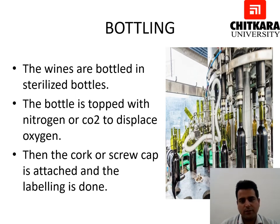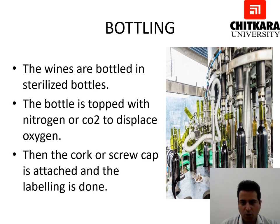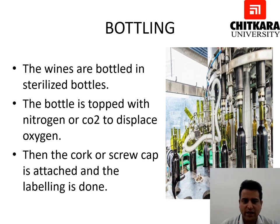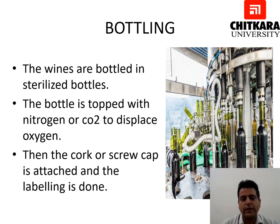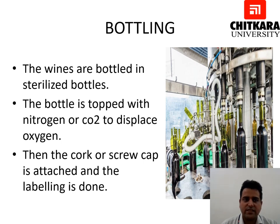The last step in the production process of white wine is bottling. The wines are bottled in sterilized bottles. The bottle is topped with nitrogen or CO2 to displace oxygen, as oxygen can be very harmful to the wine. Then the cork or screw cap is attached and labeling is done. Earlier this was done by hand, but now with technology it is done with machines, making the process more economical and time-saving.